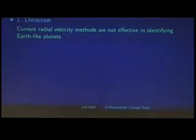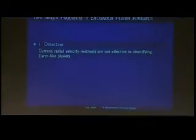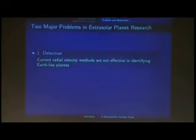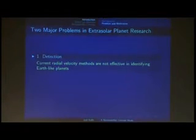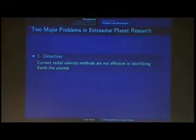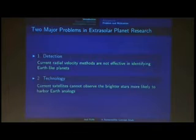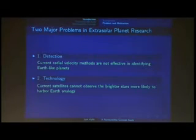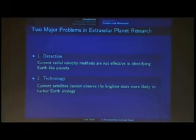There are two major problems in extrasolar planet research. The first problem is based on detection: our current methods are based on radial velocity changes, which are really good at finding planets of really high masses in short orbital periods, but these aren't the Earth-like planets we're looking for. We need to find an alternative way to detect them. In addition, we have technological limitations in our satellite and optical systems, because they can't observe the brighter stars like the Sun that we expect will harbor these Earth-like analogs.